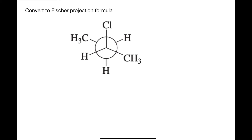How do you convert from Newman projection formula to Fischer projection formula? Here is a Newman projection formula that has been given to us and we need to convert that into Fischer projection formula. The carbon represented as a circle is connected to the first carbon. If a Newman projection formula has been given in the staggered conformation, it has to be converted into an eclipsed conformation first before we can convert it into Fischer projection formula.